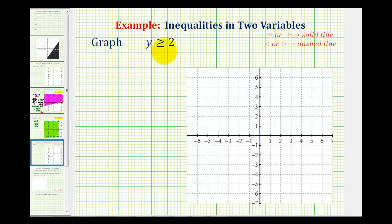We want to graph y is greater than or equal to 2 on the coordinate plane. We want to find the region that contains all the points with ordered pairs that satisfy the inequality y is greater than or equal to 2.